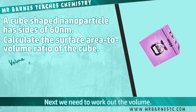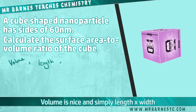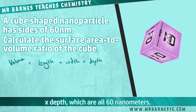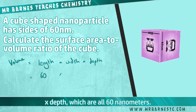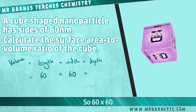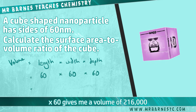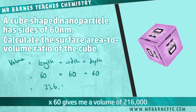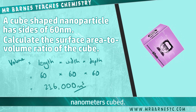Next we need to work out the volume. Volume is simply length times width times depth, which are all 60 nanometres. So 60 times 60 times 60 gives a volume of 216,000 nanometres cubed.